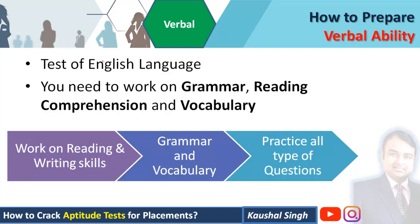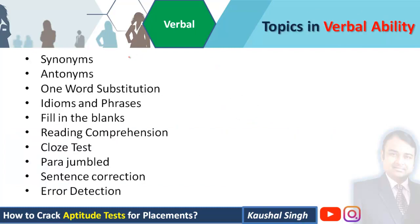The third section is verbal ability, which is a test of your English language skills. You need to work on grammar, reading comprehension, and vocabulary. Focus on improving reading and writing skills, grammar, and vocabulary, and practice all types of questions asked in this section. Topics in verbal ability include synonyms, antonyms, one-word substitution, idioms and phrases, fill in the blanks, reading comprehension, cloze test, parajumbles, sentence correction, and error detection.